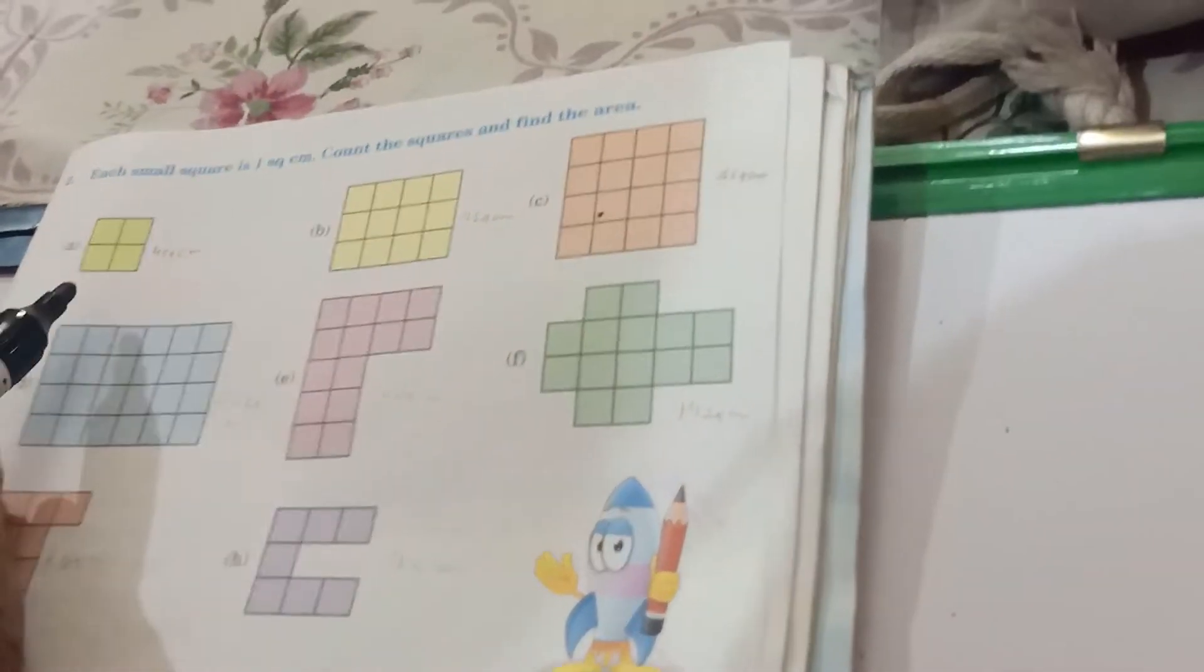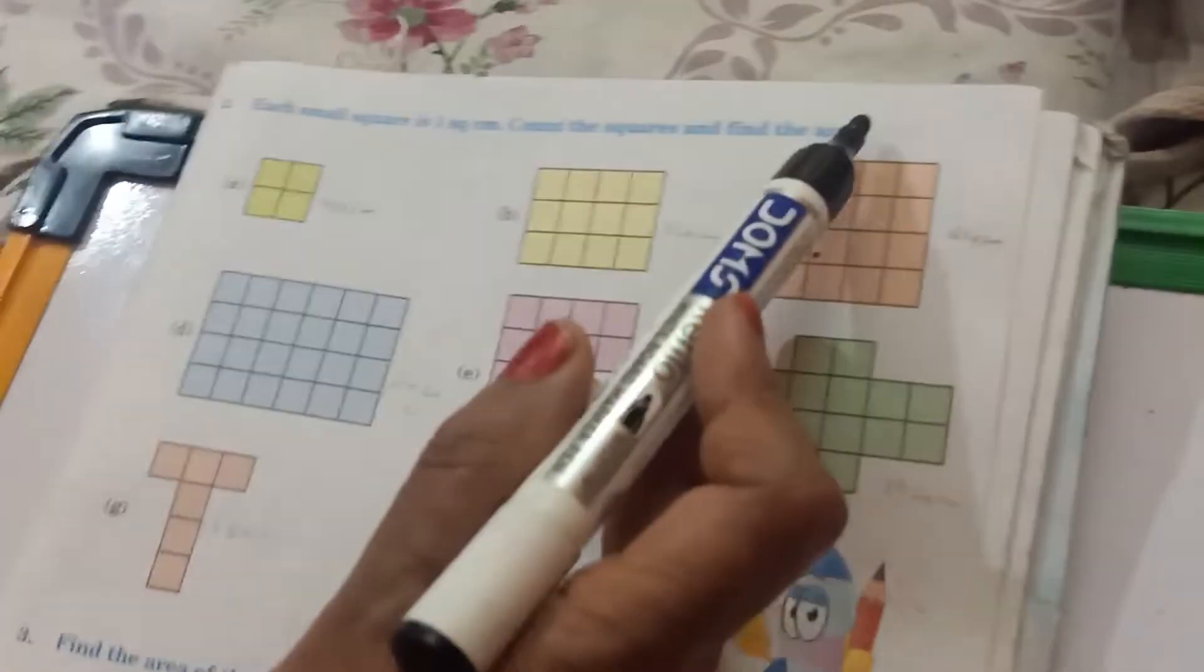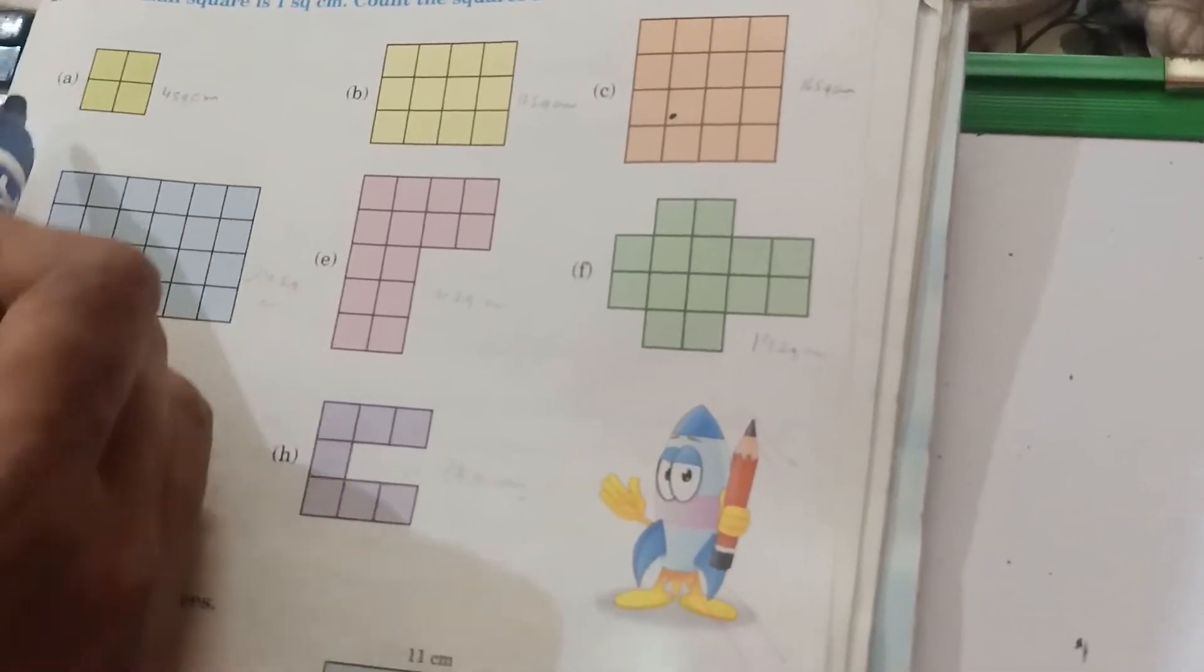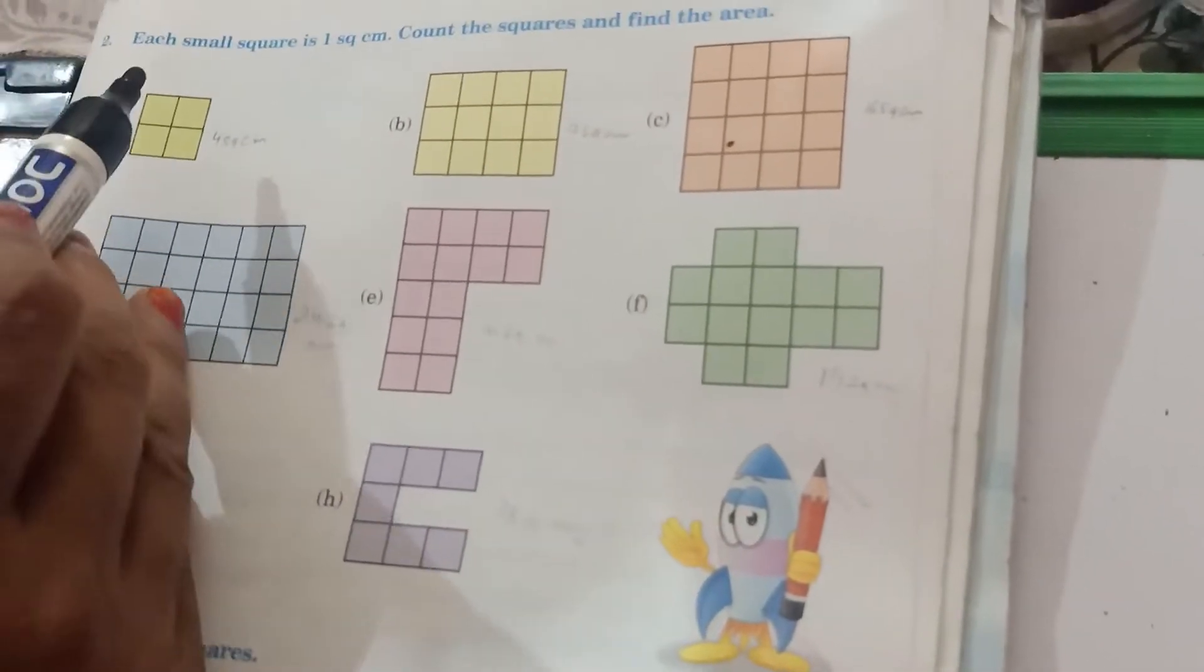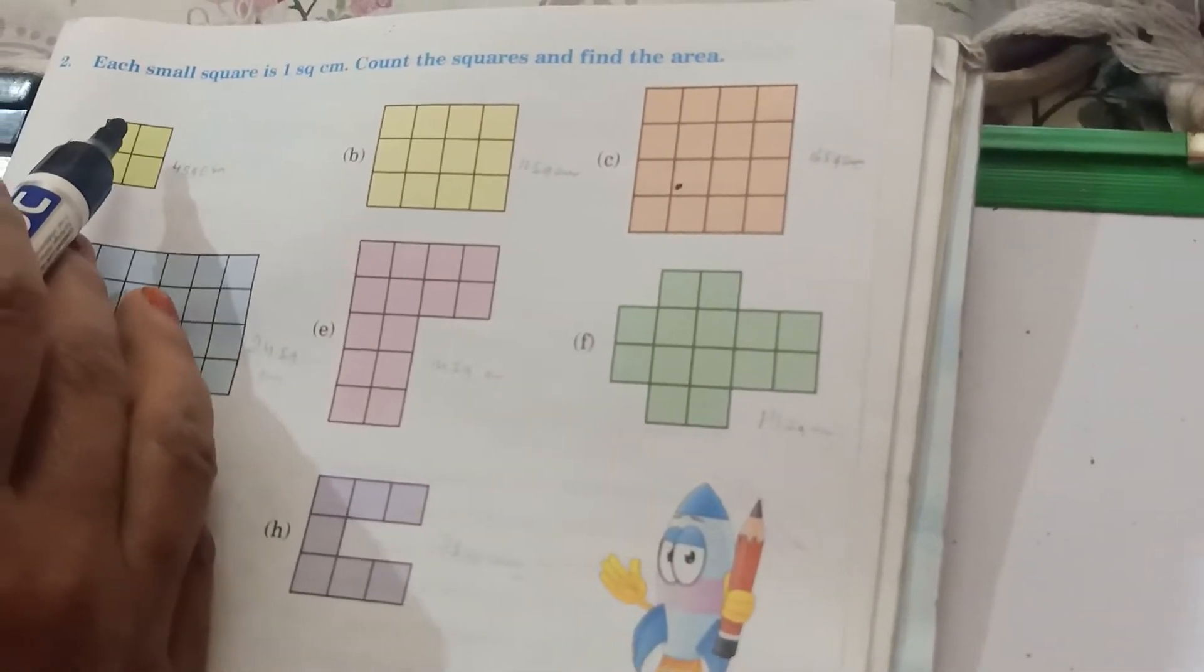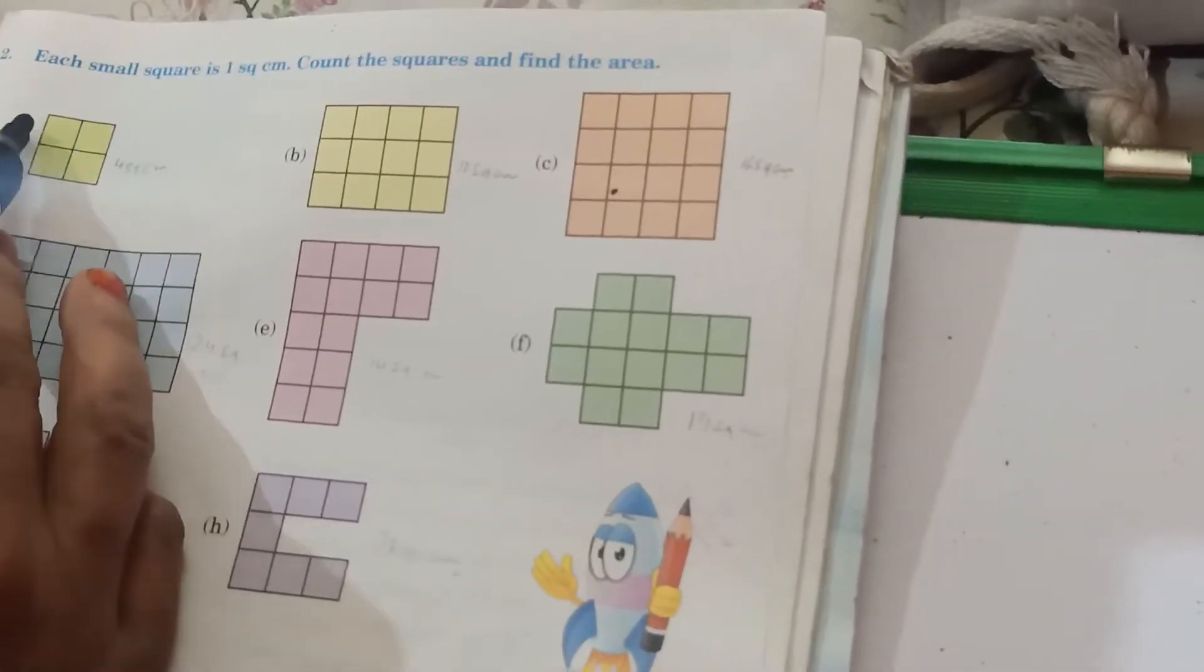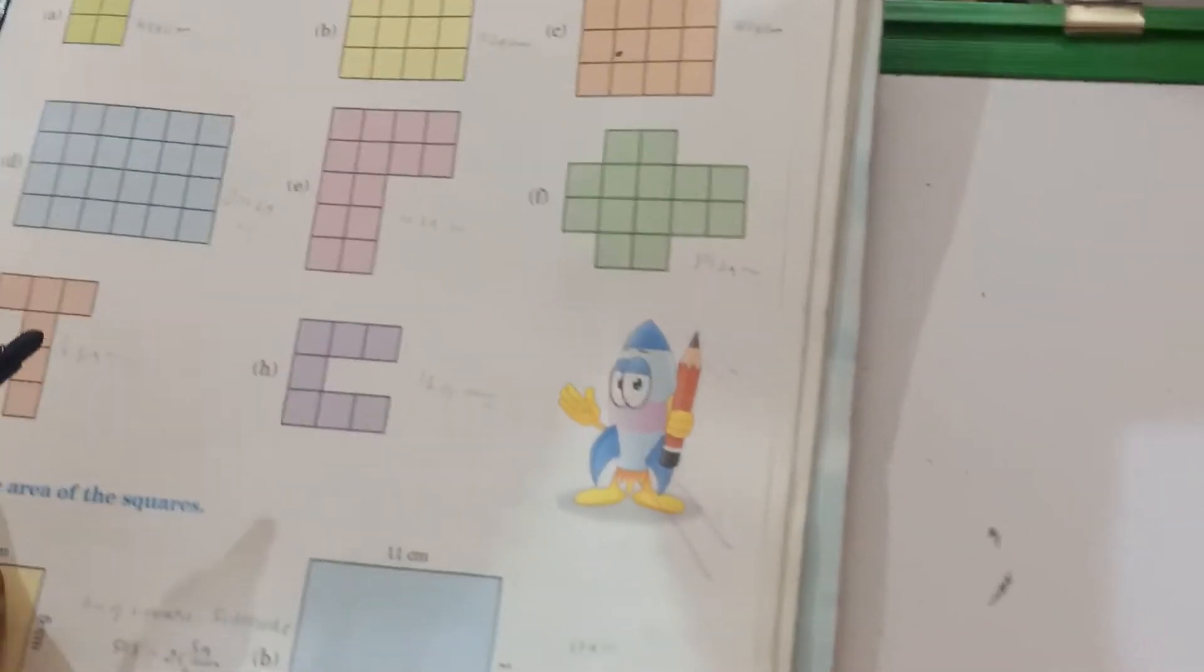Now, look carefully in question number two. A small square is one square centimeter. Count the squares and find the area. It is very simple. Each square is how much? One square centimeter. Like this you find out the area of one, two, three, four. I think you can do question number two also.